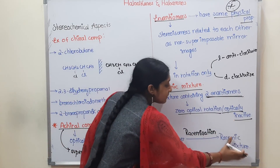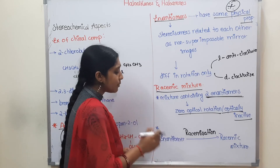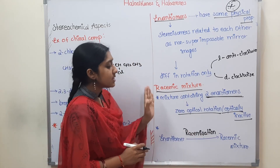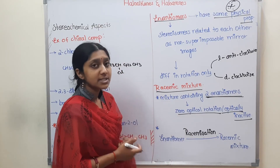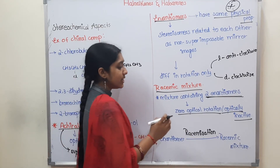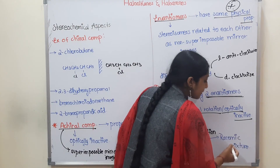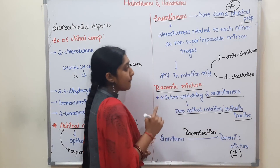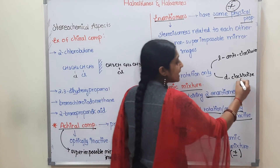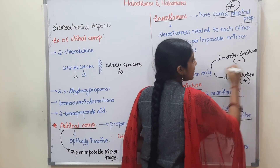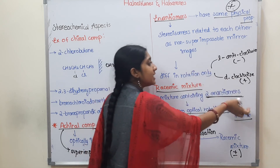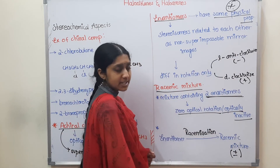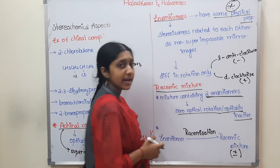Enantiomers in a racemic mixture: how do we represent a racemic mixture? Plus or minus. The D form is plus, the L form is minus. This mixture of the two enantiomers — plus and minus together — is the racemic mixture, represented as (±).